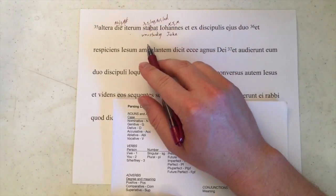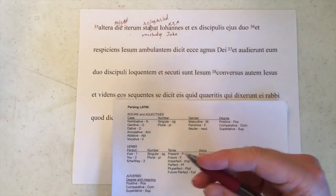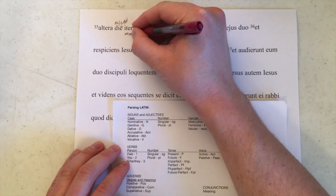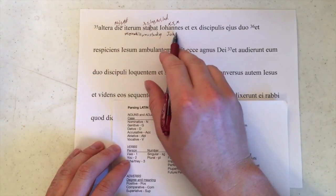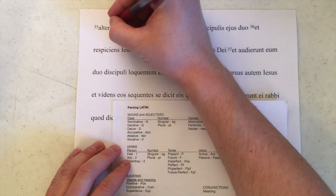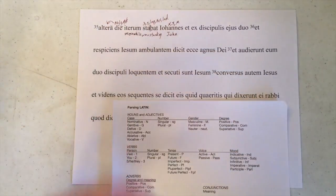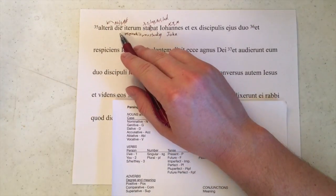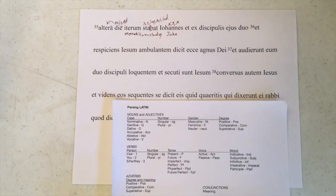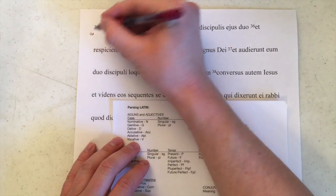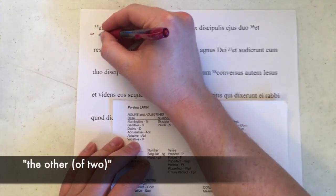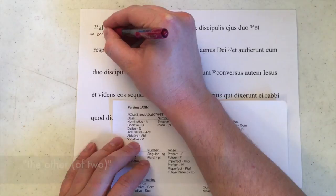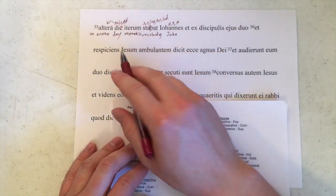So John was standing. Then we come back to the other three words to figure out what they were doing. Iterum means 'meanwhile.' Taking altera with die — since John is masculine and there's nothing else for altera to modify — this must also be ablative singular. One of the functions the ablative shows us without prepositions, especially when we have a word like 'day,' is ablative of time when. So altera die means 'on another day.' On another day, meanwhile, John was standing.